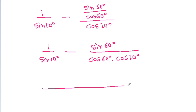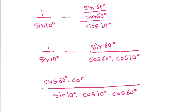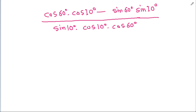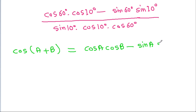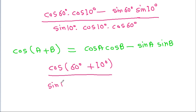We take sin 10 degree, cos 10 degree, and cos 60 degree as the LCM, giving us cos 60 degree cos 10 degree minus sin 60 degree sin 10 degree in the numerator, over sin 10 degree cos 10 degree cos 60 degree. We know that cos(A+B) equals cos A cos B minus sin A sin B, so cos 60 degree cos 10 degree minus sin 60 degree sin 10 degree equals cos 70 degree.